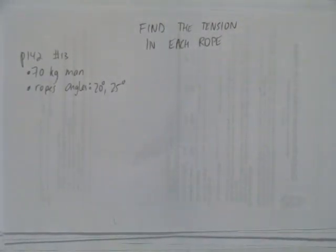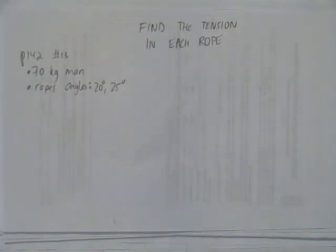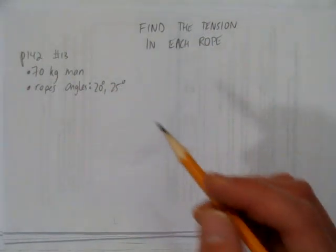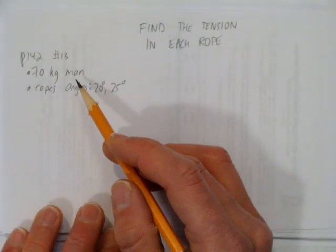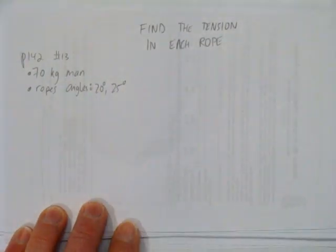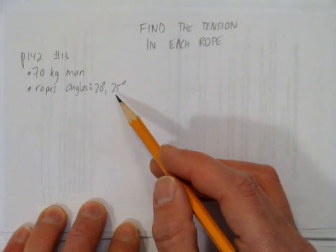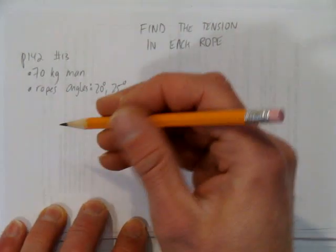In this video, we'll look at finding the tension in two different ropes. And this question comes right off your textbook, page 142, number 13. There's a 70-kilogram man, and he's in a hammock. And the hammock has ropes supporting it at angles of 20 and 25 degrees.